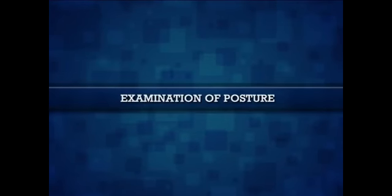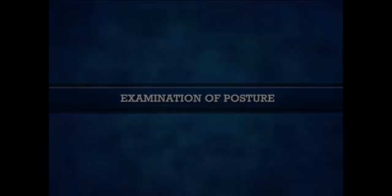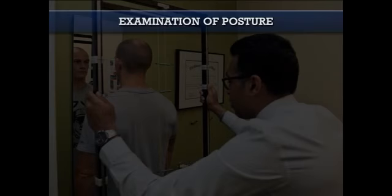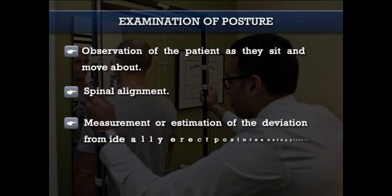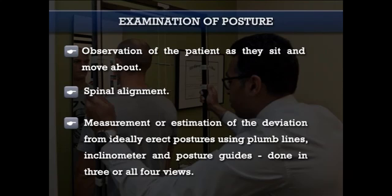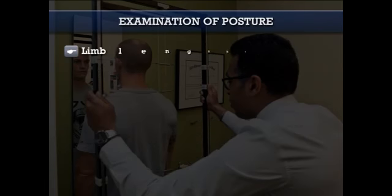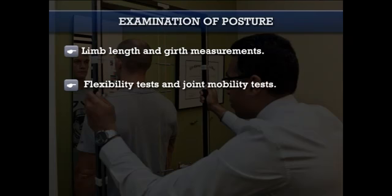So let's talk about the examination of posture. The examination should include: observation of the patient as they sit and move about; spinal alignment; measurements or estimation of deviation from ideally erect posture using a plumb line, inclinometer, and posture guides in three or four views; limb length and girth measurements; flexibility and joint mobility tests; and muscle length and strength tests.